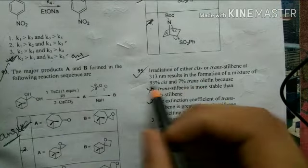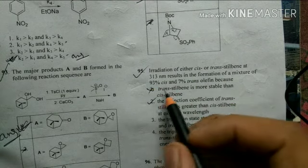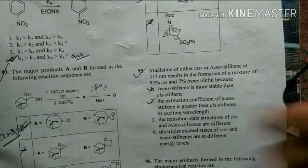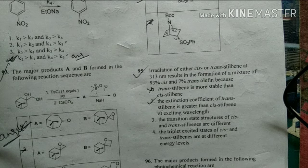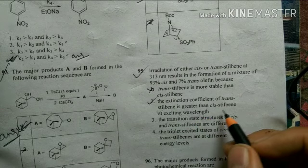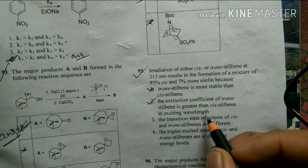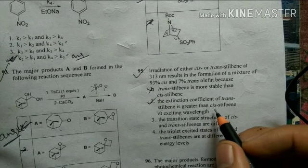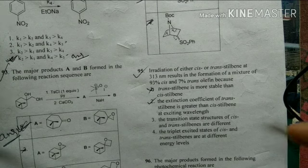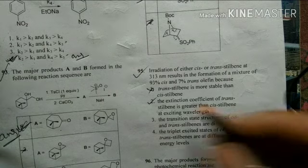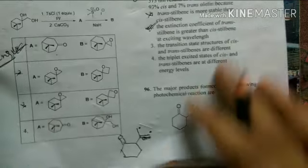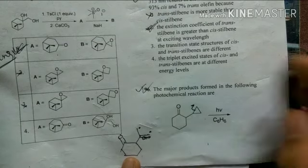Question 95 states that irradiation of either cis or trans stilbene gives 93% cis and 7% trans olefin. The most probable explanation is that the extinction coefficient of trans-stilbene is greater than that of cis-stilbene at the exciting wavelength. So only trans-stilbene absorbs at the exciting wavelength and converts to cis-stilbene, which then remains unreacted. That is why cis is the major product — option 2 is the correct answer.